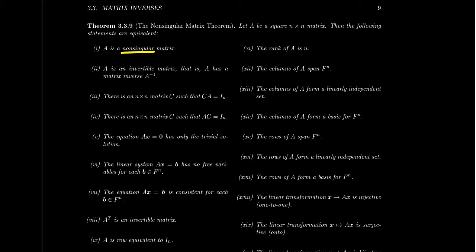When you look at condition 3, this one might seem like it's the same thing but it's a little different. A matrix can be non-singular if and only if there exists a matrix C such that CA equals the identity. This says that there exists some type of left inverse. Because matrix multiplication is not commutative, multiplying on the left is not the same as multiplying on the right. So if there's a matrix which multiplies on the left of A and produces the identity, checking for a left inverse is actually sufficient to show that a matrix has an inverse.